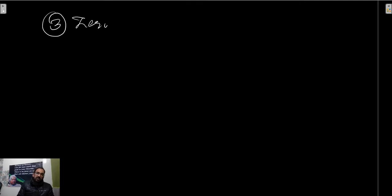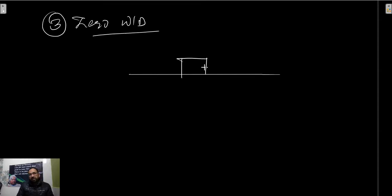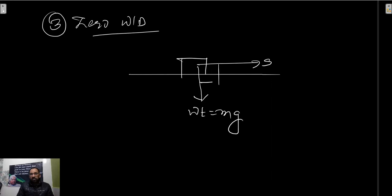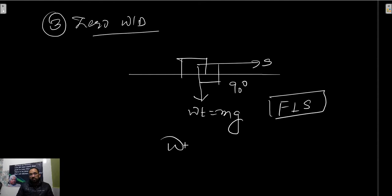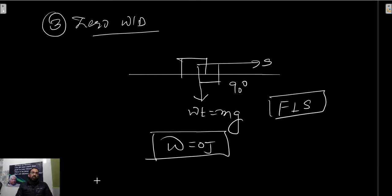Third case: zero work done. What do we mean by zero work done? Suppose the object has displacement in the forward direction and force is perpendicular to the displacement, just like the weight. Weight is mg acting in the downward direction while the object is displaced in the forward direction. The angle between them is 90 degrees. When force is perpendicular to displacement, work done will be 0 Joule.